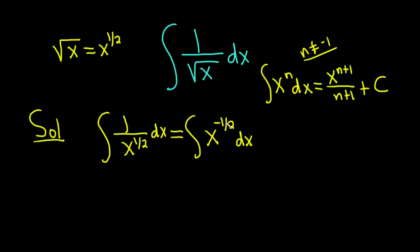So in our particular example, n is negative 1/2. So we just have to add 1 to that. So if you add 1 to negative 1/2, it's really negative 1/2 plus 2/2, so it's really just 1/2.